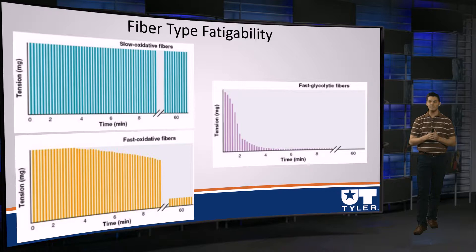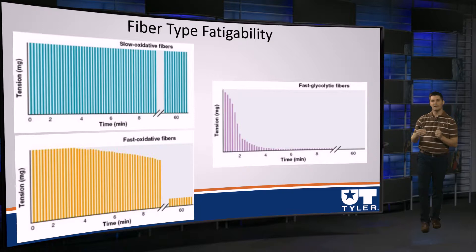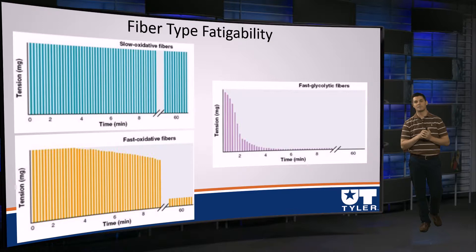Last but not least, in the purple figure, we have our fast glycolytic fibers — also known as type 2B or X fibers. You'll see that the height of that line indicating force falls off incredibly rapidly. Within about a minute and a half, the force-generating capacity of these fibers is severely depressed. These fatigue incredibly fast, and therefore we say that these are fast fatigable fibers.